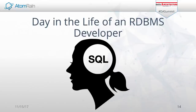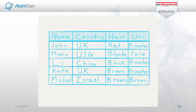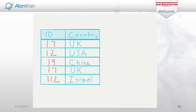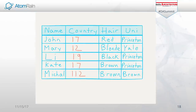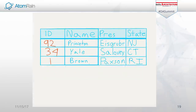Where we're at today in most enterprises is we're dealing with SQL — everything's primarily on a relational database. Developers end up thinking about looking at tables like this. In this example, I've got name, country, hair color, and university — so John from the UK, red hair, Princeton, etc. What I'll likely do is denormalize it to proper third normal form: I'll go ahead and give every country an ID, make a country table, then add a leader to that country as additional information. Coming back to the main table, I add that foreign key reference for the country so I don't have to duplicate that information.